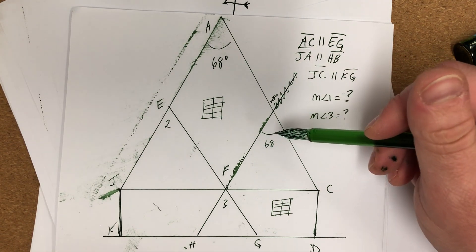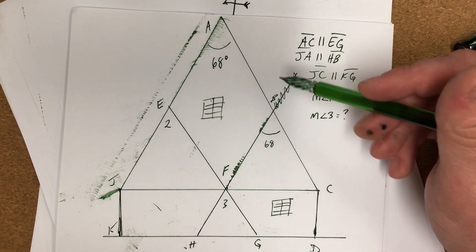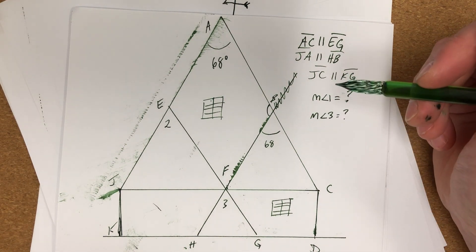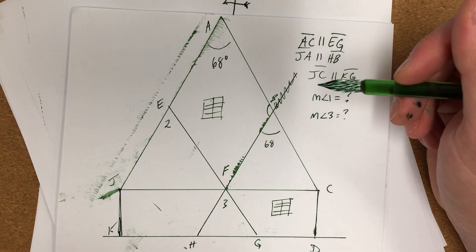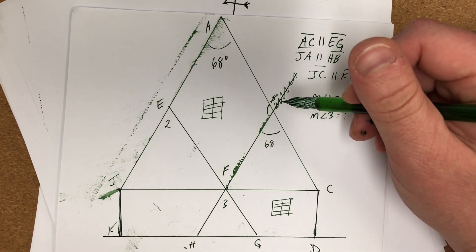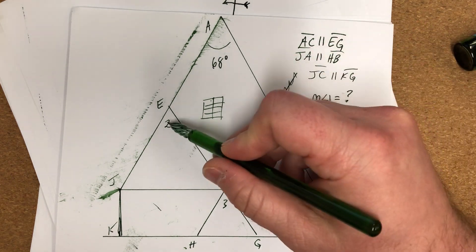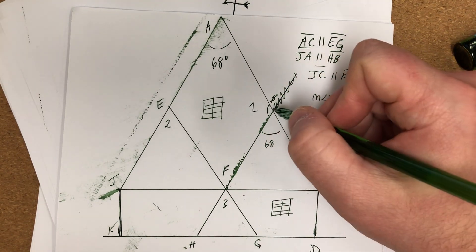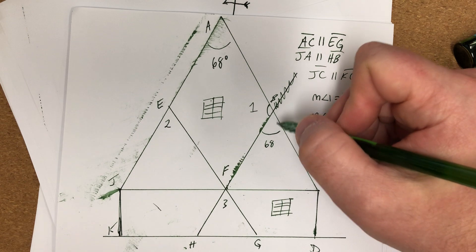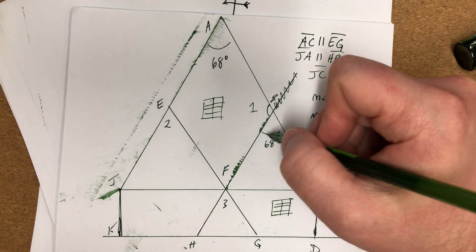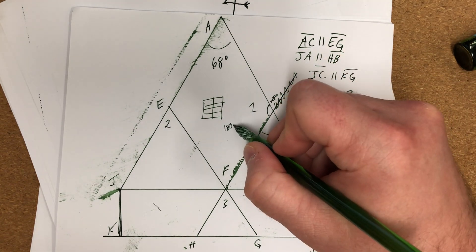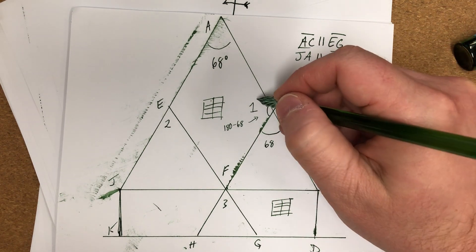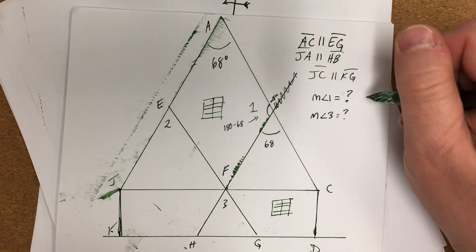All right, oh this line's not supposed to be there. So that's 68 and that's 68. Well then, hey, we know that this is the supplement of that, right? Oh I didn't even label, here's angle two. Here's angle three, here's angle one. This is actually angle one, so angle one would be the supplement of 68, so 180 minus 68 goes right there, that's going to be 112. So angle one is gonna be 112 degrees.